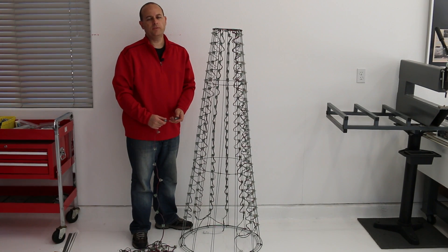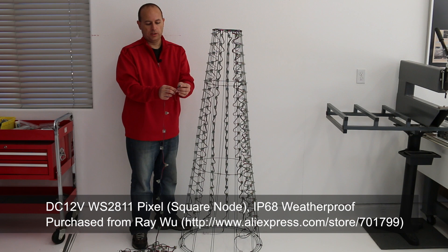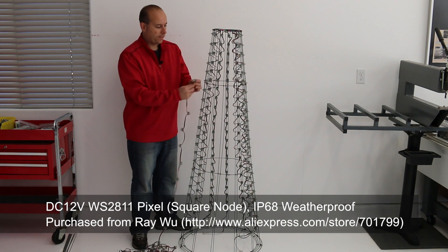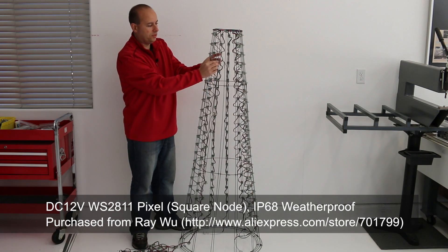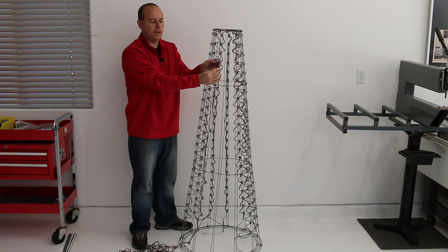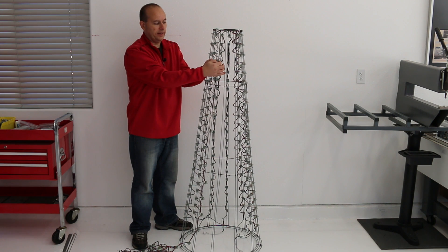The pixels that I've chosen for my trees are these square type. They're WS2811s. I'll post a link to them. I purchased them from Ray Wu. I like these because they fit just right between each of the rods. I then use a zip tie around each pixel to snug it into place.